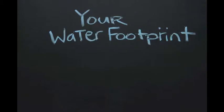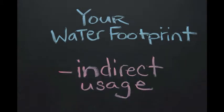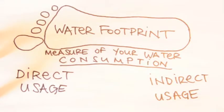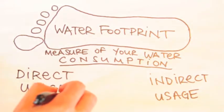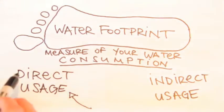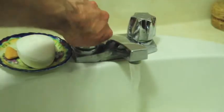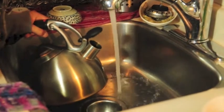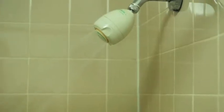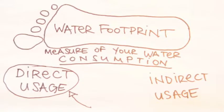Your water footprint and indirect usage. In our first video we looked at your water footprint and how it can get bigger or smaller depending on how you use it directly. Your direct usage of water is like when you turn on your washing machine, a tap, or a shower, or flush your toilet — you're using water directly. Indirect usage is something a little bit different.